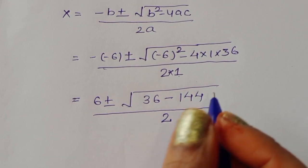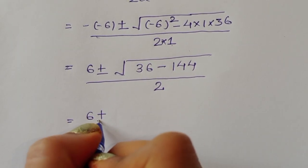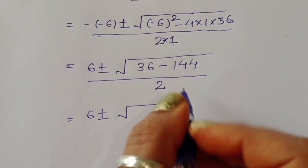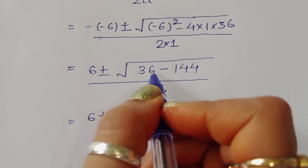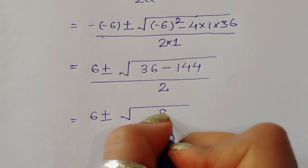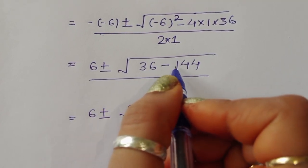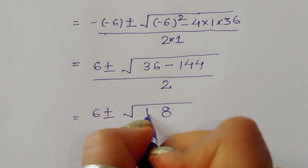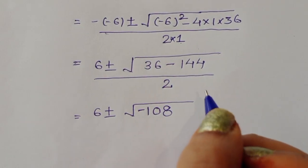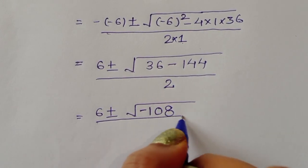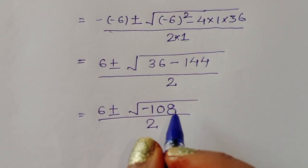Simplifying: minus minus gives plus, so we have 6 plus or minus square root of 36 minus 144, divided by 2. Now 36 minus 144 gives minus 108. So x equals 6 plus or minus square root of minus 108, divided by 2.